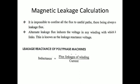The first is inductance, which is flux linkage of the winding divided by current: L = T·φ / I. The second is reactance, which everyone knows: X = 2πFL. With these definitions, we now go on to deal with magnetic leakages.